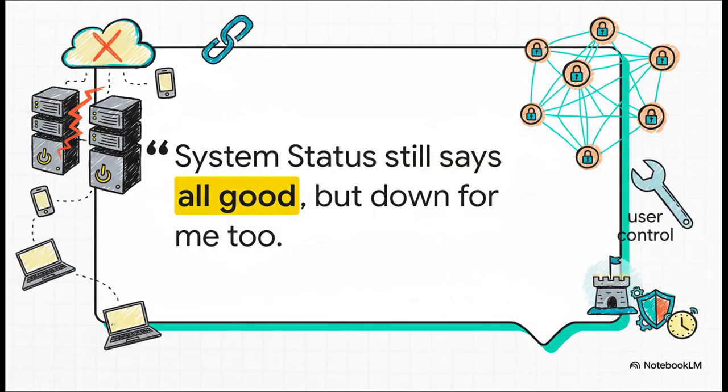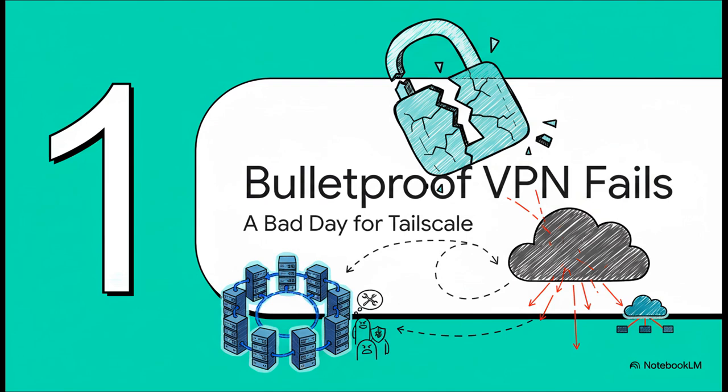So just imagine this for a second. Your secure connection to literally everything is gone. But when you go check the official status page, it's all green. Everything's fine, it says. This one sentence from a user, it just captures the whole problem, doesn't it? It's not just that a service is down. It's being told that the problem you're seeing isn't really happening.